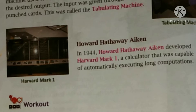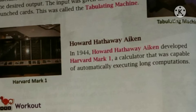The next is Howard Hathaway Aiken. Aiken developed Harvard Mark I, a calculator, in 1944, which was capable of automatically executing long computations.